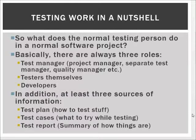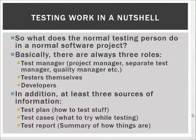Regardless of the size, scope, and domain of the project, there are always at least a couple of key sources of information for testers. The test plan tells us how we should test our stuff — it provides general guidelines or more detailed plans on how to do testing work, especially on this project. The test cases define what we should try out while testing. Finally, there's the test report, which is a summary of what was tested and how things happened. So: three roles, three sources of information.